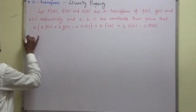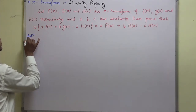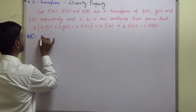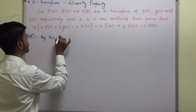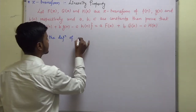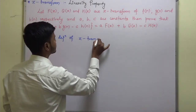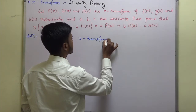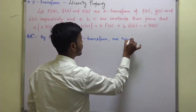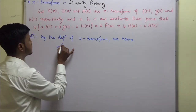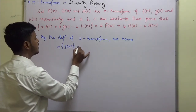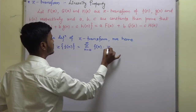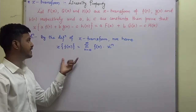We can start with the definition only and we will try to prove this result. By the definition of Z-transform, Z-transform of F of N is equal to summation N equals 0 to infinity of F of N into Z to the power minus N. That is the definition we have.